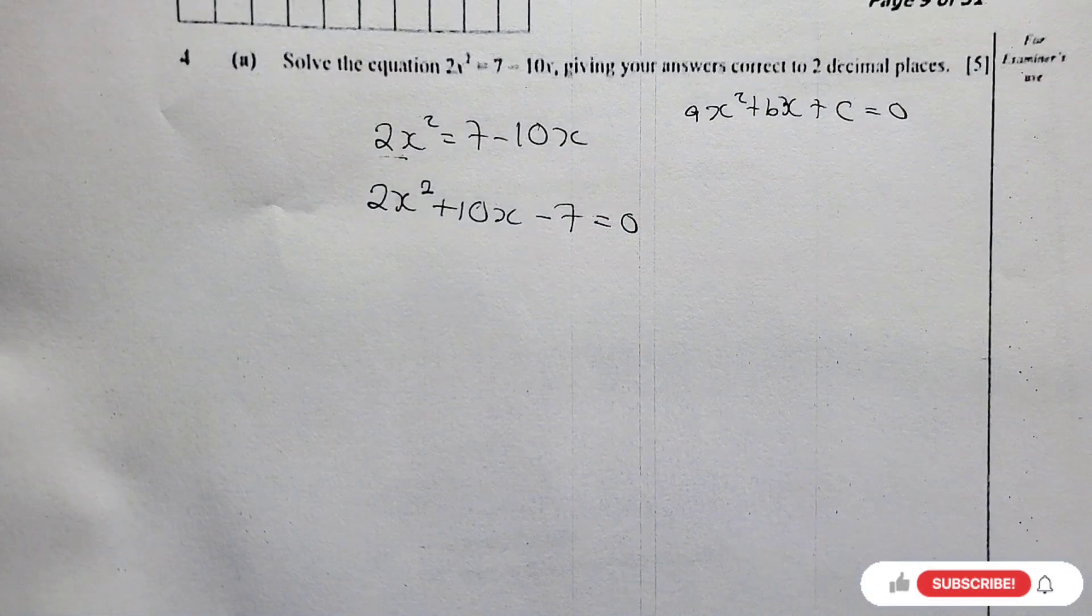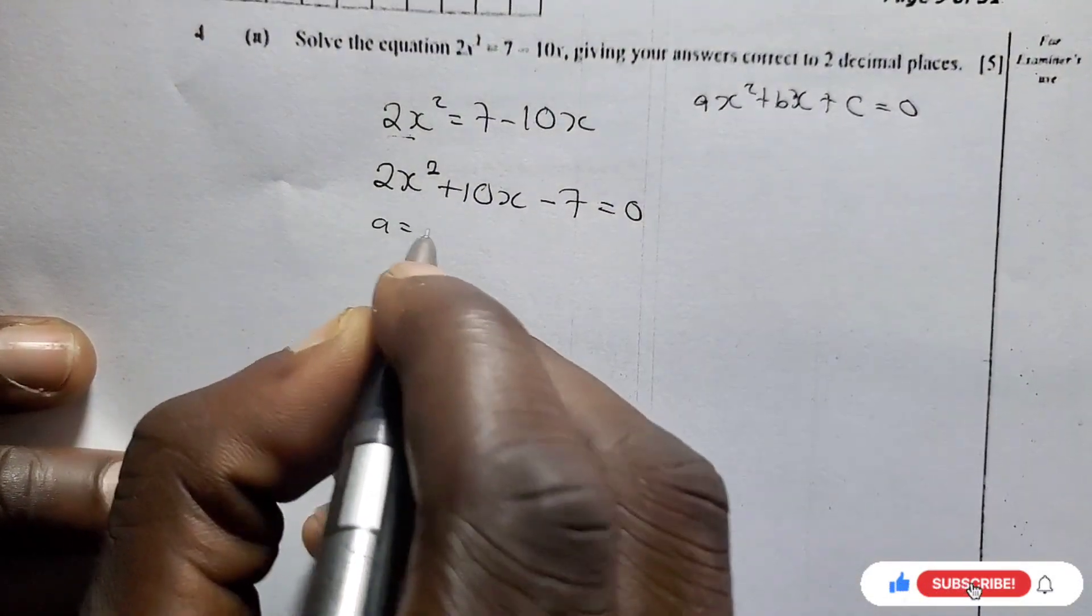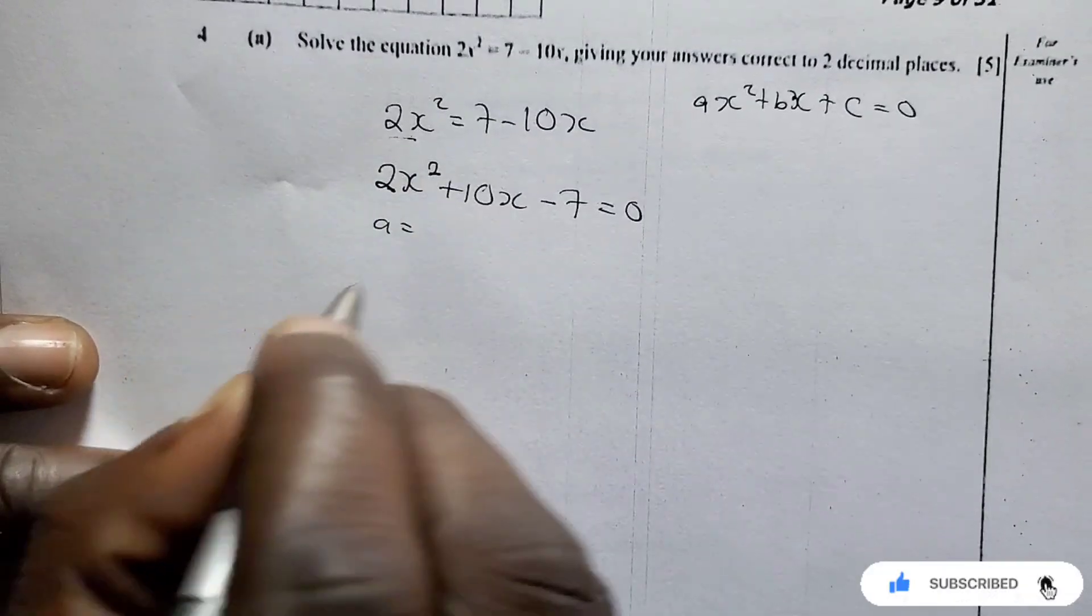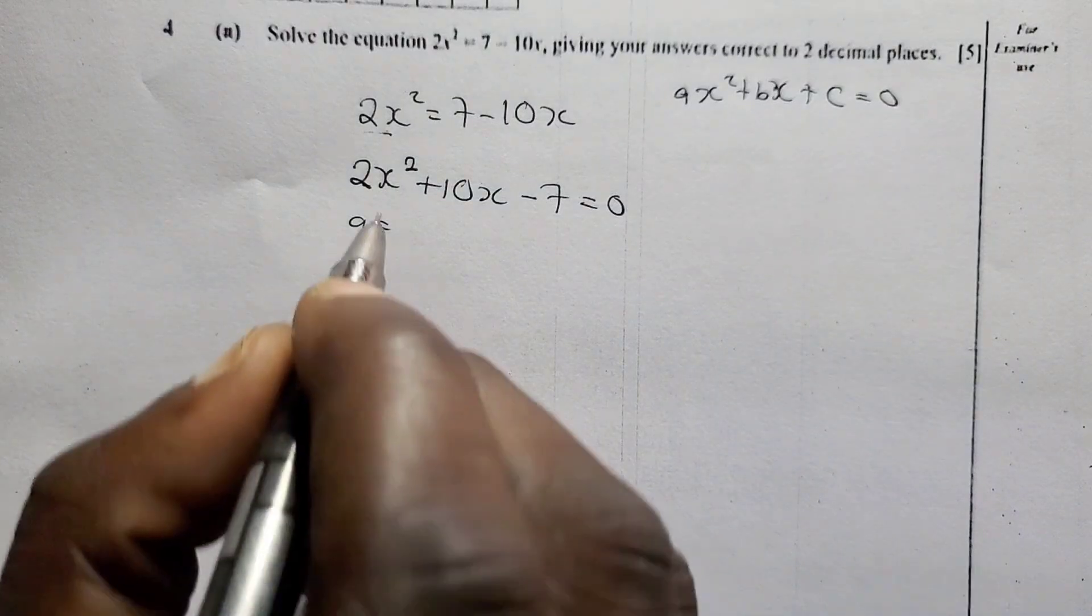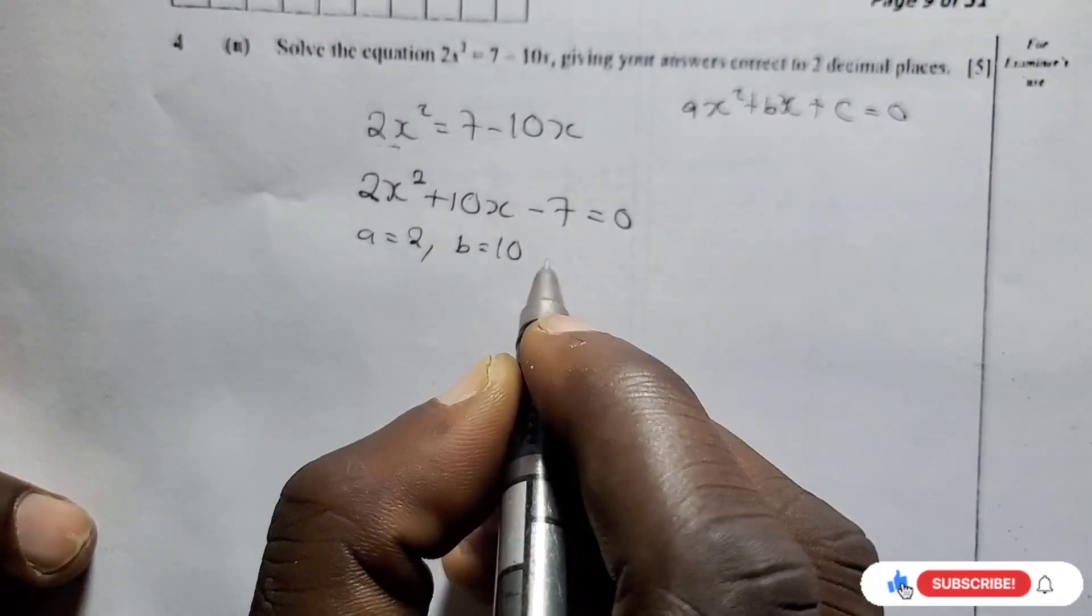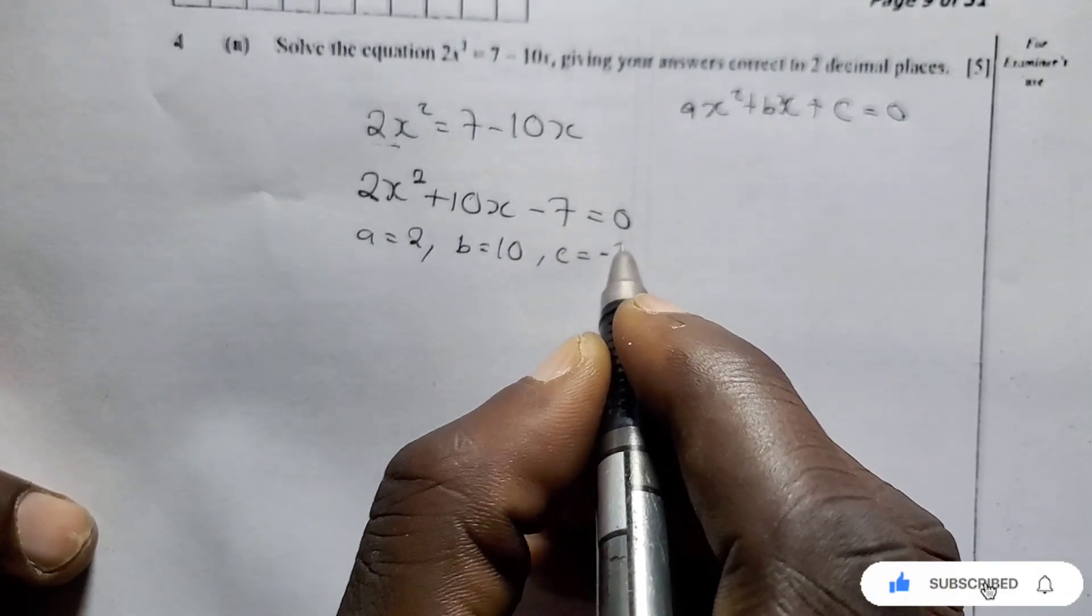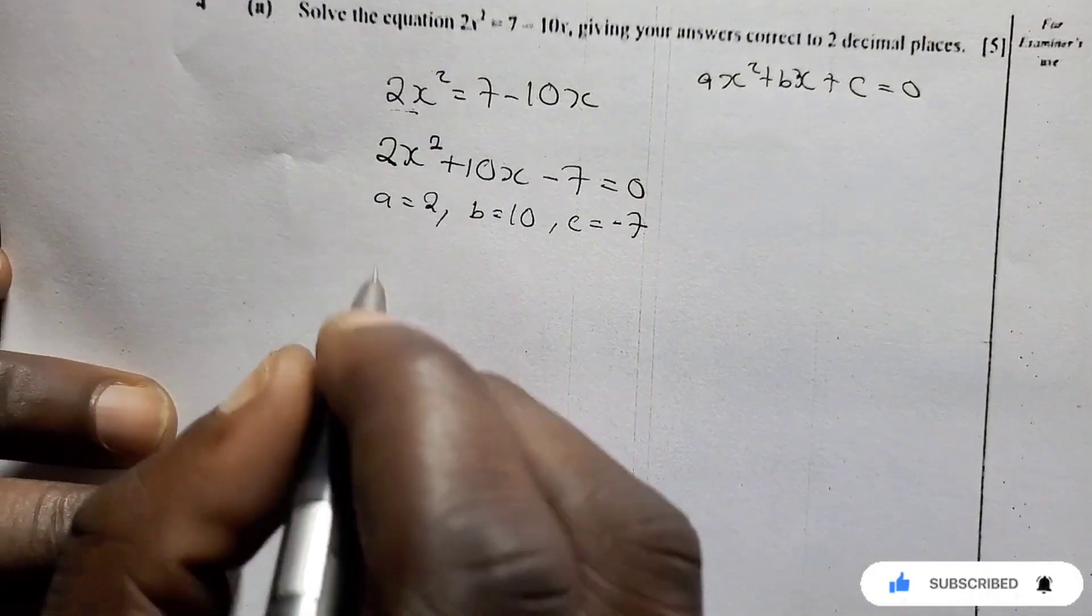Then we can solve this. So what is our A? Our A is the coefficient of any variable that is a square, the number in front of any variable that is a square. So this one is 2. Our B is 10. Our C is the constant here, which is negative 7.